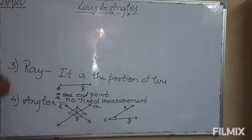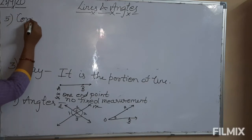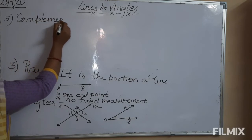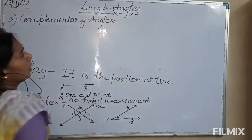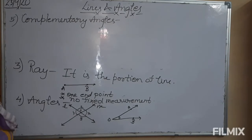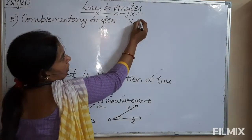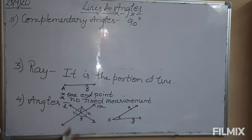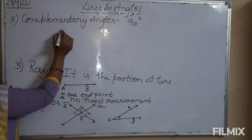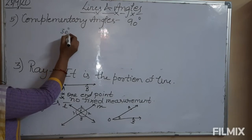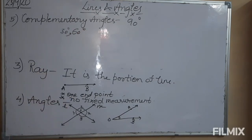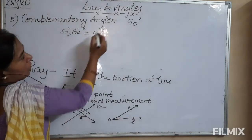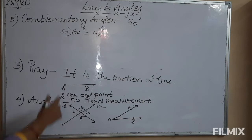Fifth point is complementary angles. Those angles whose sum is 90 degrees. For example, if the first angle is 30 degrees, the complement of this 30 degrees is 60 degrees, because the sum of these two angles is 90 degrees. So we can say this pair of two angles is complementary angles.